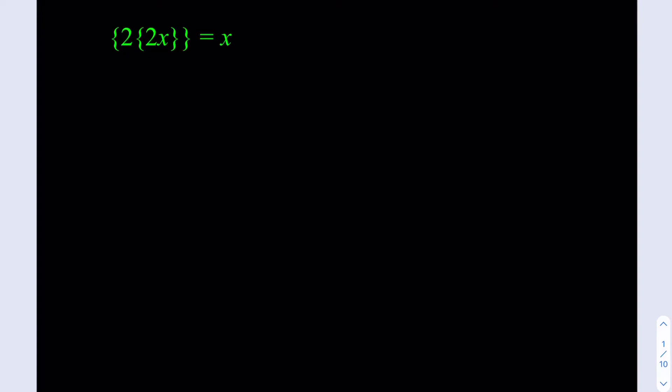Hello everyone. In this video we're going to be solving an equation that uses the fractional part of a number. The fractional part of x is defined as the excess beyond the number's integer part. For example, the fractional part of 1.87 is 0.87. In other words, if you subtract the floor value of x from the number itself, you get the fractional part of x.